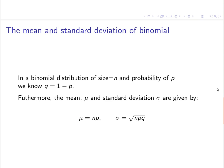A binomial distribution is a relative frequency distribution, so we can calculate the mean and standard deviation the same way as for any relative frequency distribution. The mean of a binomial distribution is n times p, and the standard deviation is the square root of n times p times q. We'd like to compare a normal distribution with that mean and standard deviation to the binomial distribution.